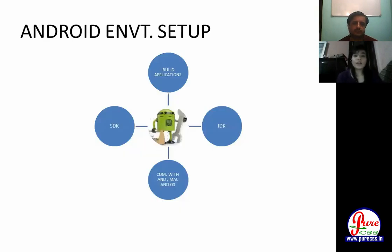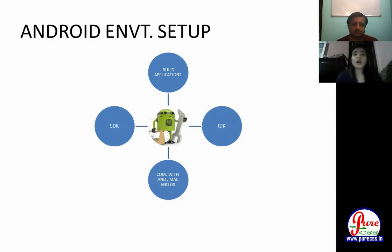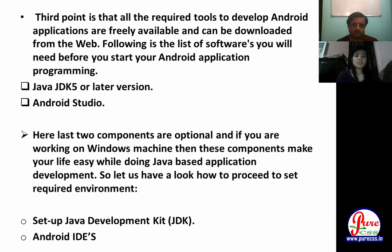Next is Android environment setup, which is needed to build applications. It requires the SDK (Software Development Kit), which is used to create various types of software. Third is the Java Development Kit. It is compatible with Android, Mac, and various operating systems. All the required tools to develop Android applications are freely available and can be downloaded from the web.